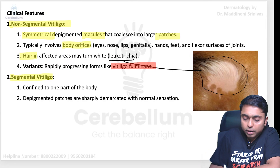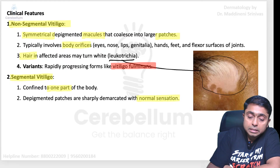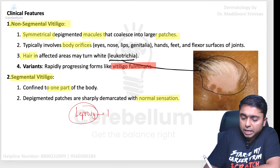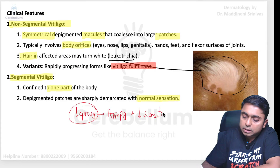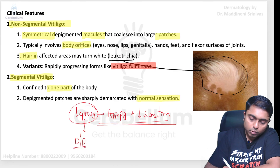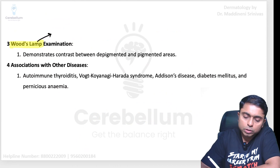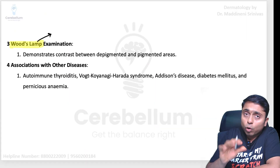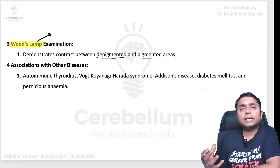In segmental vitiligo the lesions are confined to one dermatome, and depigmented lesions are associated with normal sensation — this is very important. Leprosy is an important differential diagnosis for vitiligo. Leprosy is associated with hypopigmented lesions, but those lesions have reduced sensation, unlike vitiligo where sensation is normal. Regarding investigation, Wood's lamp examination shows contrast between depigmented and pigmented areas, and the depigmented area becomes more exaggerated under Wood's lamp.